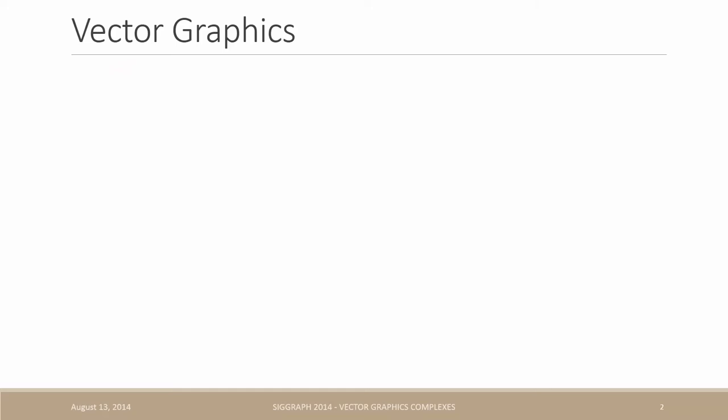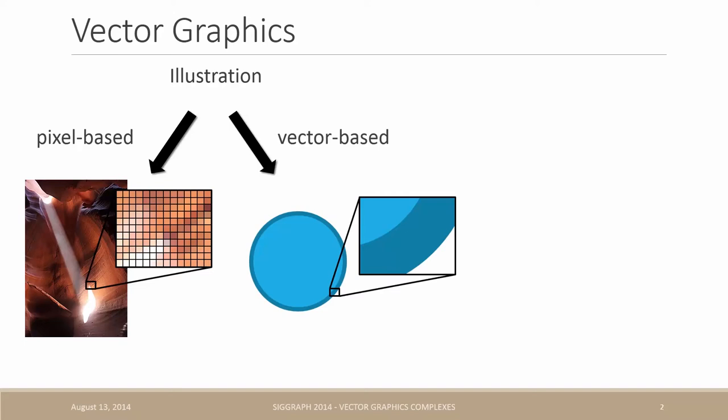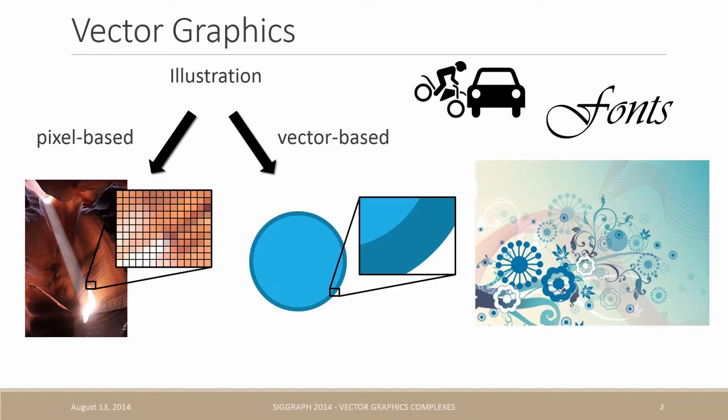So first, let's record briefly what vector graphics is. You basically have two approaches to represent an illustration. The first one is the pixel-based approach, and the second one is the vector-based approach, and is the subject of this presentation. So an image is described by mathematical primitives such as this circle, and a direct advantage is that it is resolution independent. Vector graphics is everywhere, so every logo, font, and many illustrations are vector graphics.